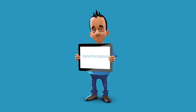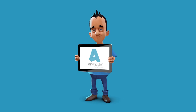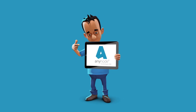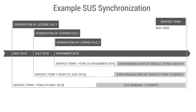If you have purchased sessions over time and the service terms of existing Anynode licenses are different, these runtimes can be synchronized as needed. By aligning, you get consistent durations and thus a better overview of your system. The basis for the alignment is the service duration of the first acquired Anynode license, and the price calculation is done on a monthly basis.